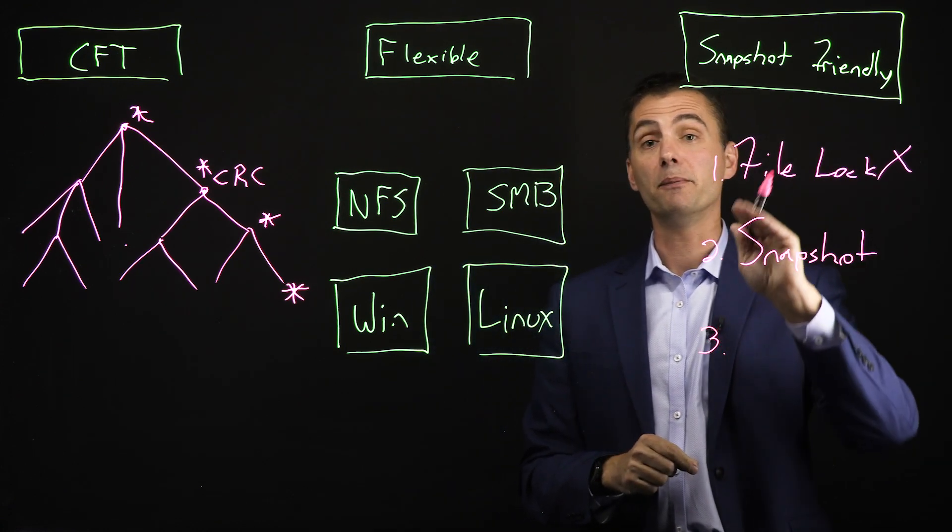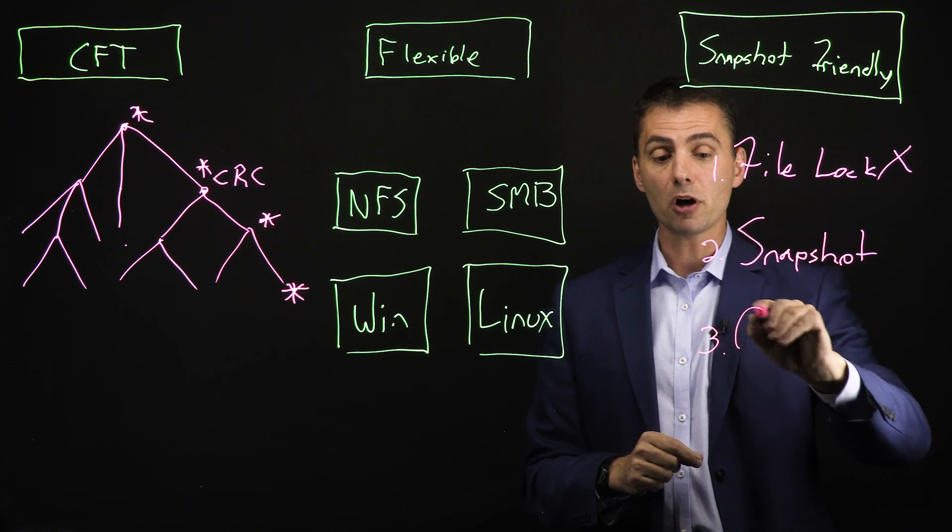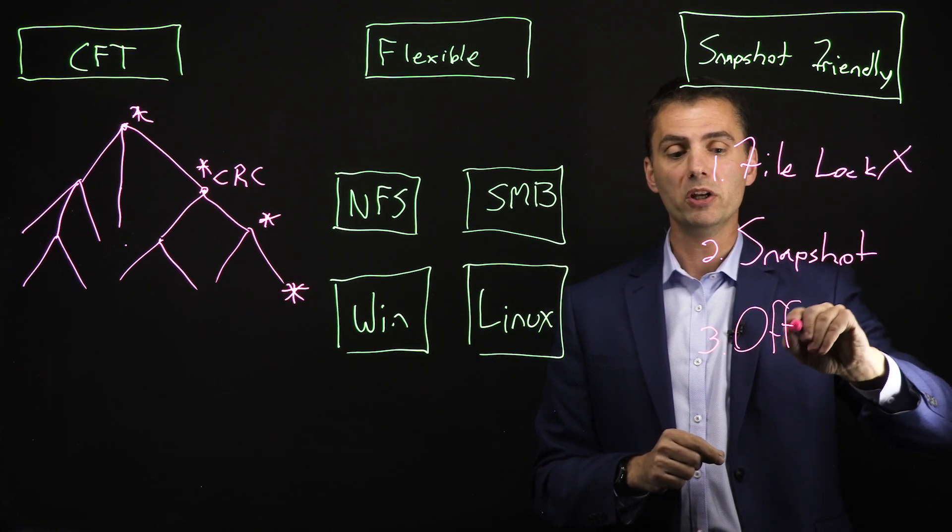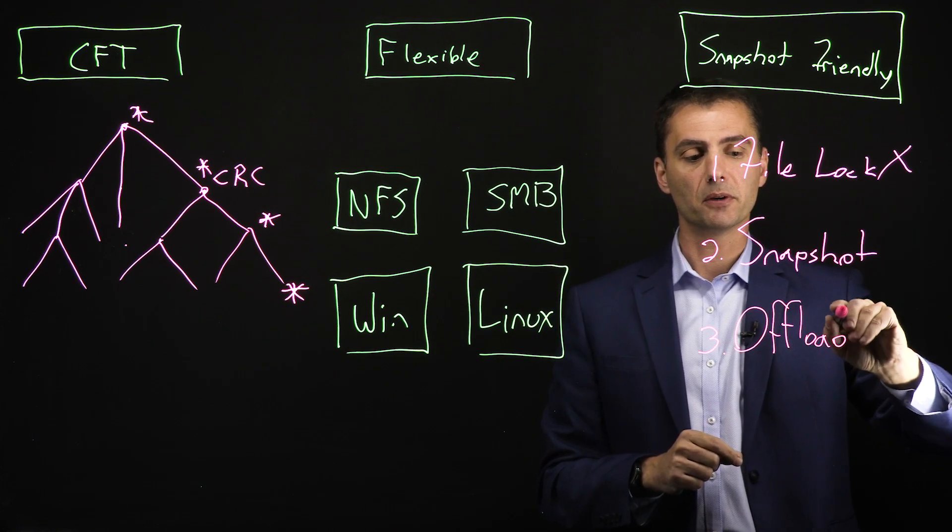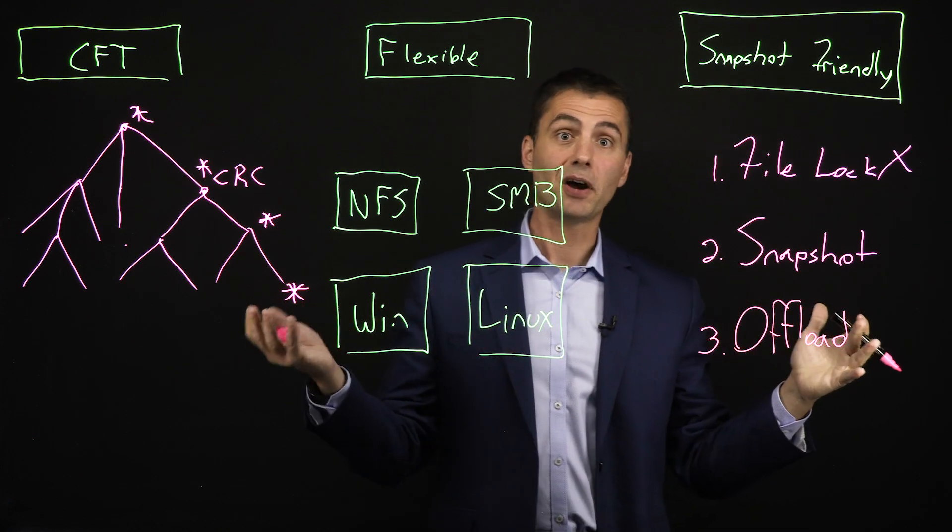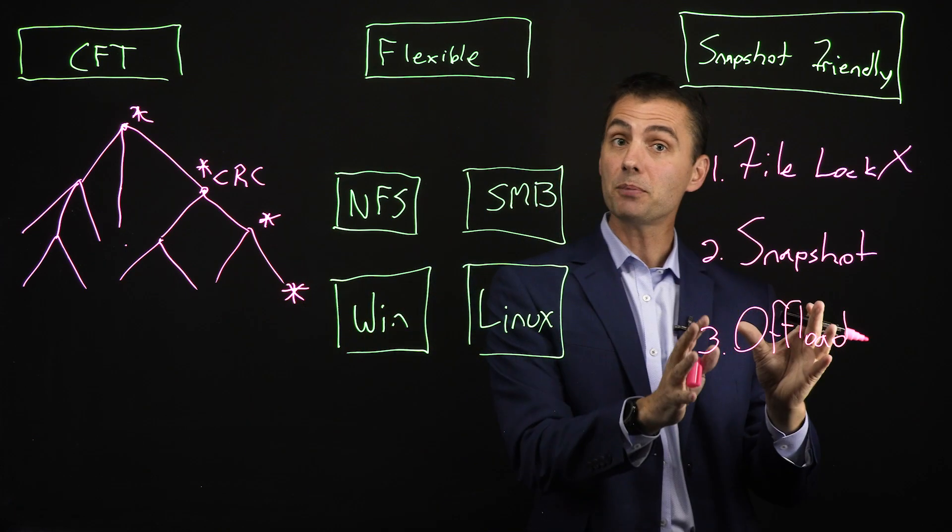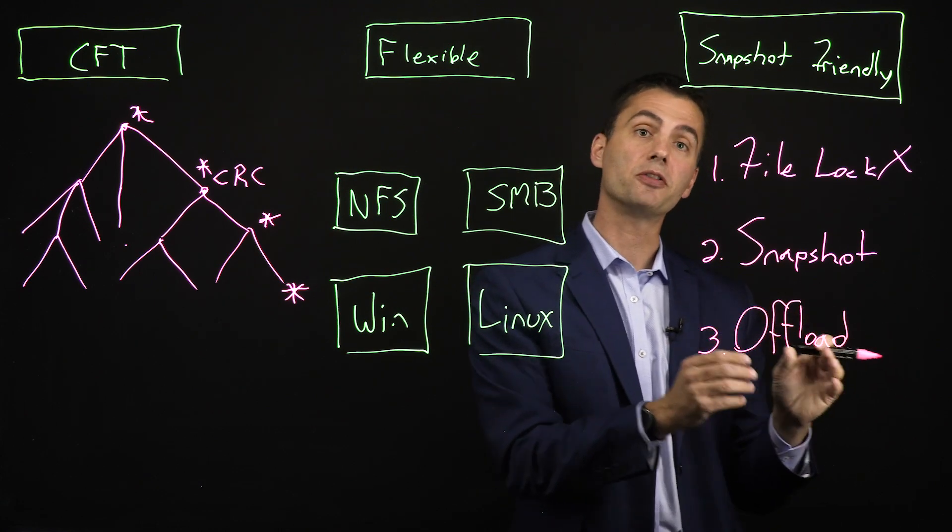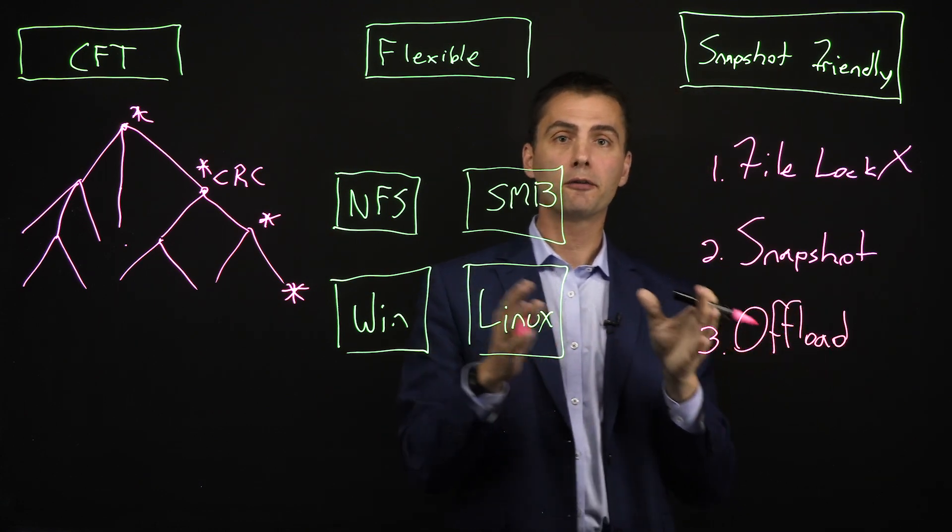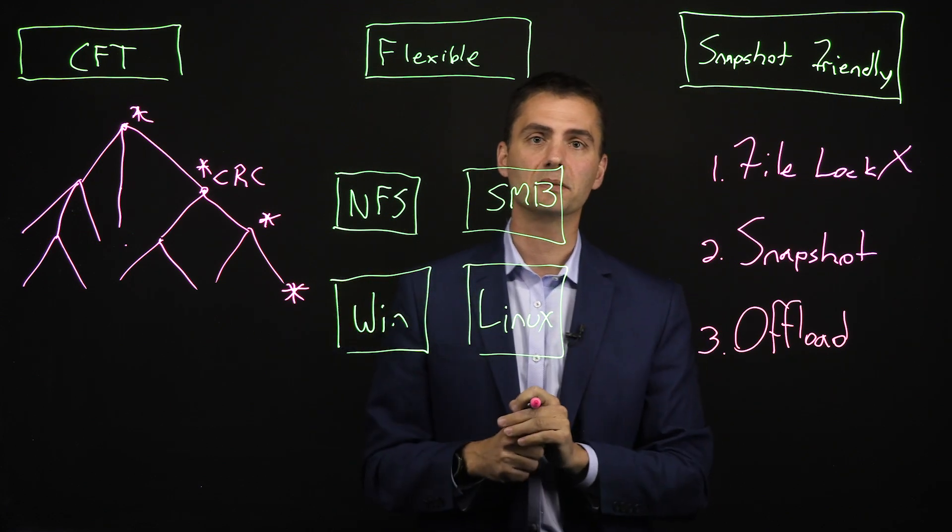And then the third benefit of being snapshot friendly is that you can offload that work. Now, we know that backing up a file system takes a lot of IO because you're moving data from the file system. And if you can take a snapshot and do your backup from the snapshot, then you can offload the work from your NAS storage system to a secondary system.